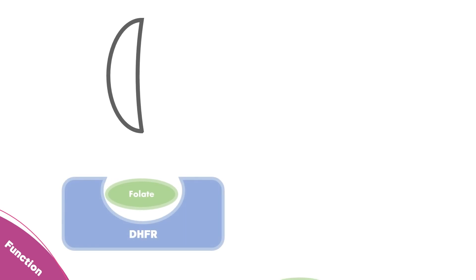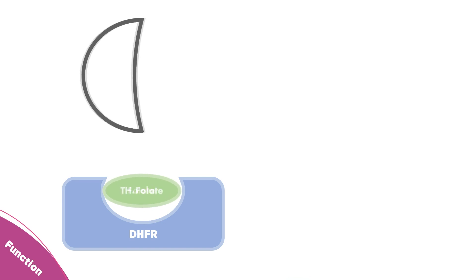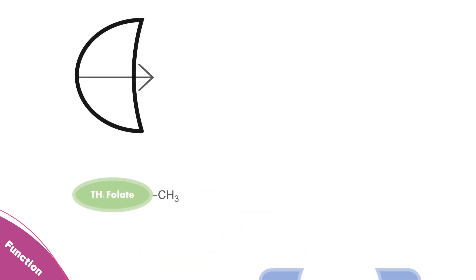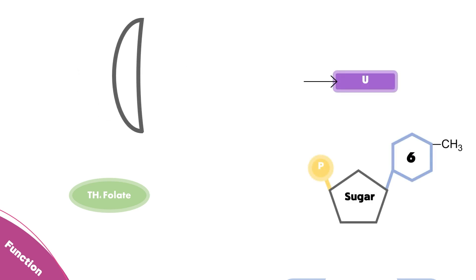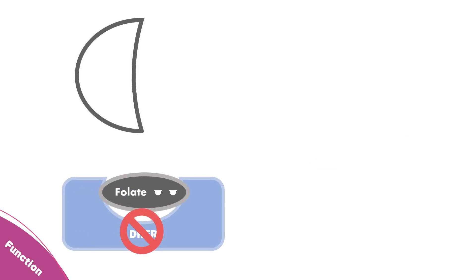First, the folate is reduced by an enzyme called DHFR, turning into tetrahydrofolate. After this conversion, another enzyme loads it with a carbon unit. This carbon unit can be donated to uracil, for example, transforming it into thymine needed for DNA synthesis. However, the folate analogues bind and block DHFR from converting intrinsic folates into their active forms.